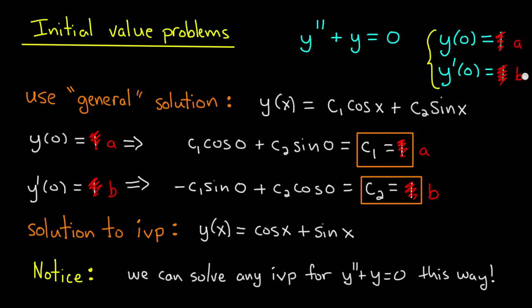No matter what I let a and b be, I would still get a solution which is a linear combination of cosine and sine that would solve the initial value problem.